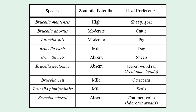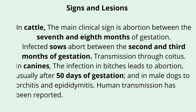Brucella suis has a moderate zoonotic potential with pig as the host preference. Similarly, there is Brucella canis for dog, Brucella ovis for sheep, Brucella neotomae for desert wood rat, Brucella ceti for cetaceans, Brucella pinnipedalis for seals, and Brucella microti for common voles.